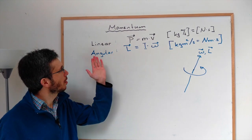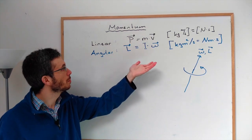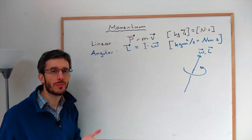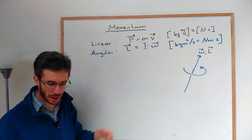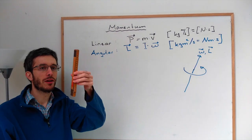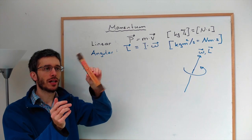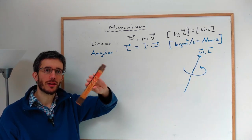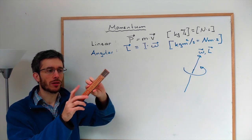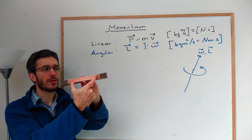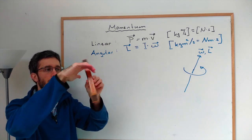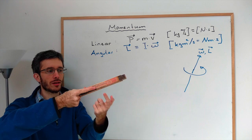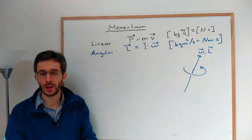Now that angular momentum L equals inertia I times ω, the big question is: what is the inertia? Inertia depends on the object and specifically on the distribution of mass relative to the axis of rotation. For example, rotating this meter stick around this axis requires far more resistance than rotating it around a perpendicular axis, because the mass is much further from the axis of rotation.